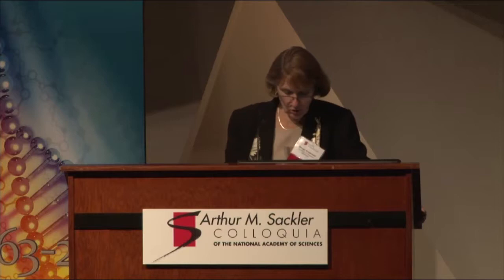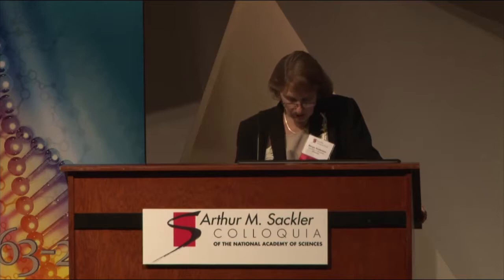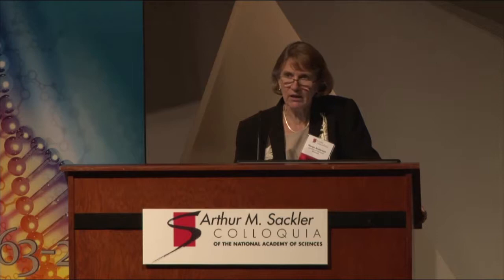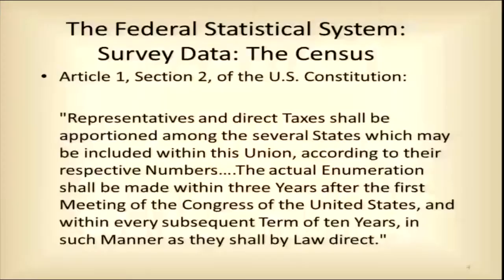The United States has what is called a decentralized statistical system embedded in the building of the American state in the Constitution. We have two legs of the statistical system. One is based on survey data — the foundational instrument is the census, and the foundational constitutional provision is Article I, Section II: 'Representatives and direct taxes shall be apportioned among the several states according to their respective numbers,' which mandates the census. We have taken 23 decennial censuses since 1790, and the agency that produces that data has grown into the nation's premier survey research organization, the U.S. Census Bureau.